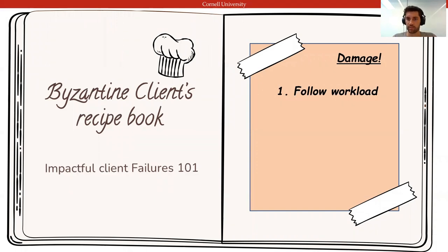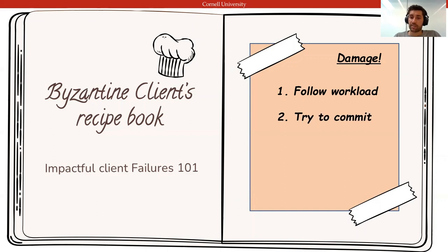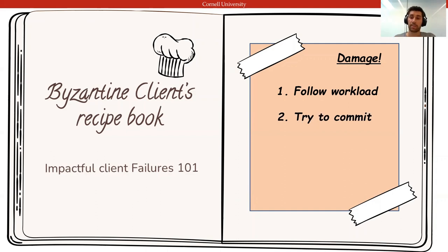The first and most obvious thing a Byzantine client should do is try to estimate and follow the perceived workload as closely as possible, because only conflicting transactions interact in Basel. Second, only committing transactions become visible to others, so a Byzantine client doesn't get much out of sabotaging its own transaction by executing a non-serializable snapshot or reading purposefully stale or invalid values.